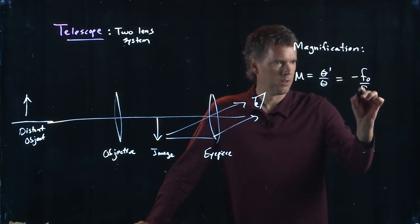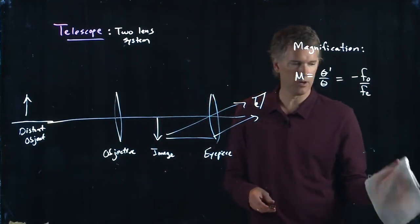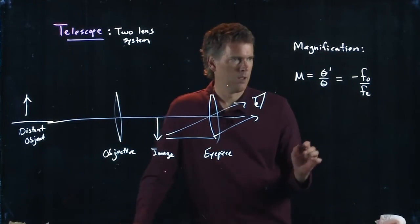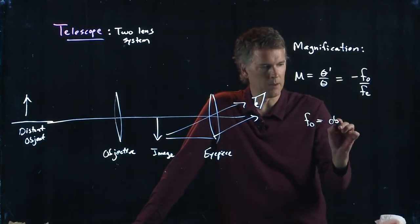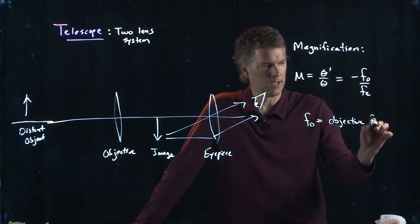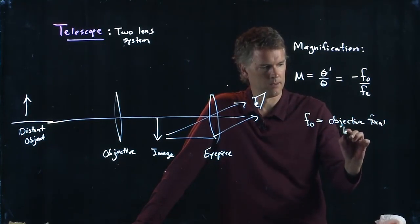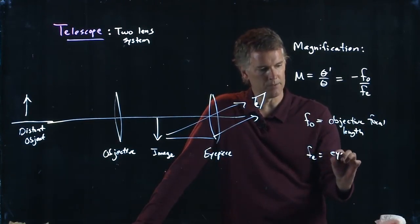And in the telescope case, it becomes this, negative f_o over f_e. The negative sign just means it's upside down. Don't worry about that. This is still the objective focal length. f_e is the eyepiece.